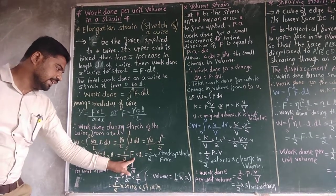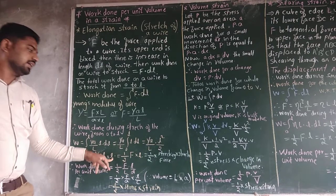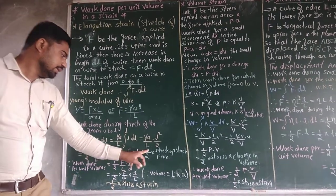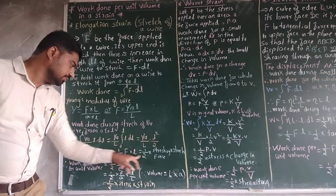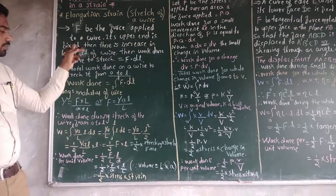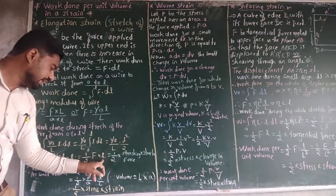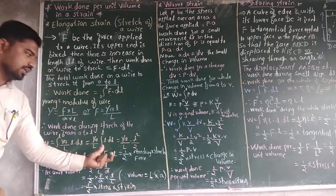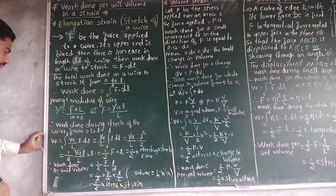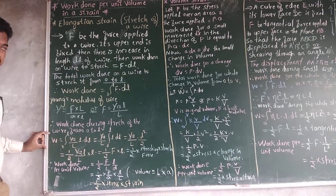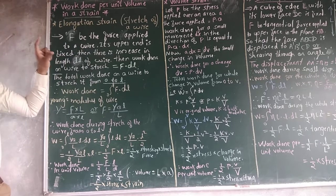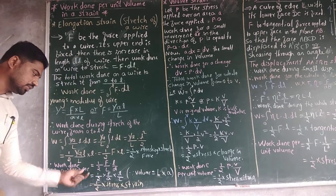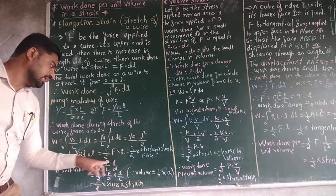In place of Y·A·L/capital L, write F. Therefore W equals (1/2)·F·L, where F is the stretching force and L is the stretch of the wire. This is the work done. But what we want is work done per unit volume.